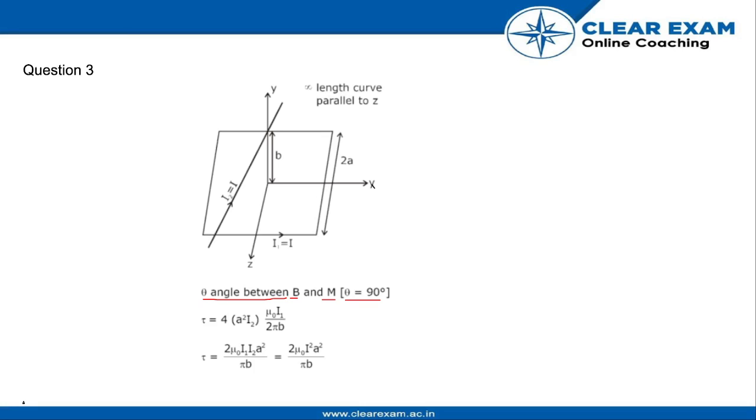So we will simply put in the values. Tau is equal to 4A² I into μ₀ I upon 2π b. Or tau is equal to 2μ₀ I² A² upon π b. So the correct answer is option 3.